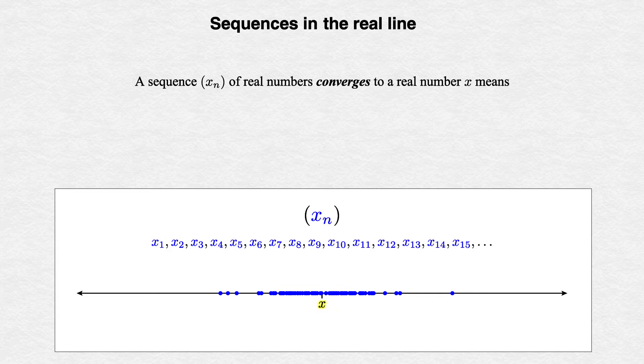The first question is, how close do the terms need to squeeze to the limit x? As close as we like. We paint a target for the terms extending epsilon units to the left and right of the limit x. Epsilon could be any positive number we like, so we say for all epsilon greater than zero.